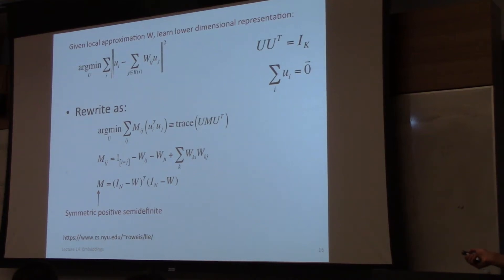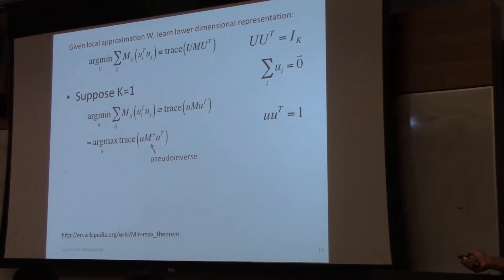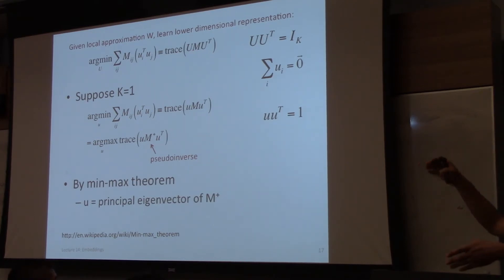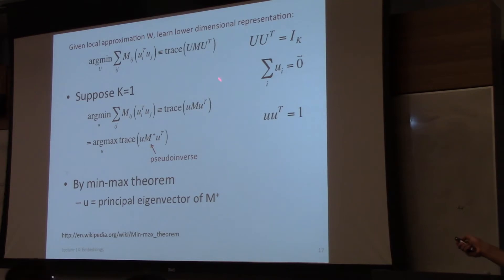So m is n by n, u is k by n, and u transpose is n by k.